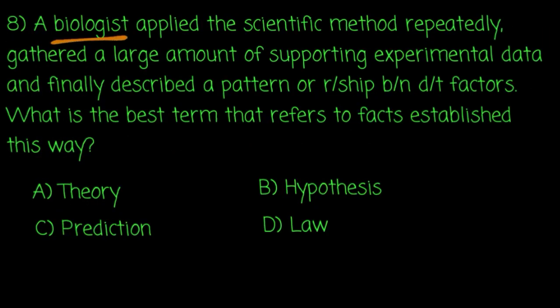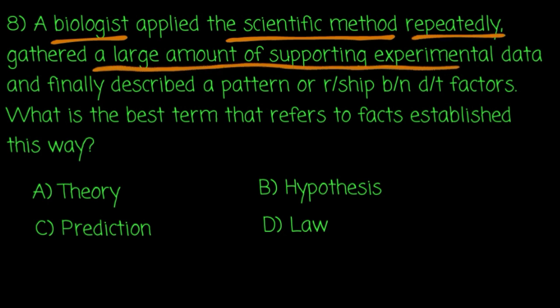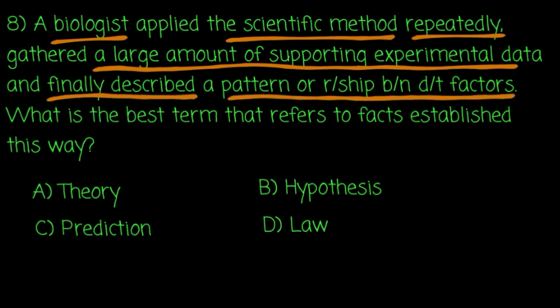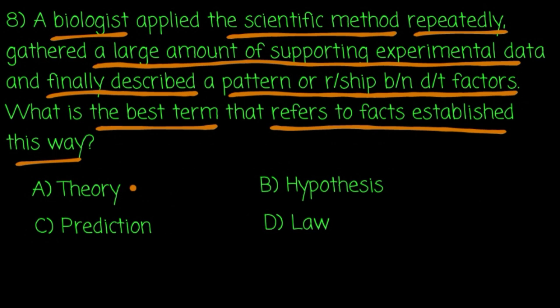A biologist applied the scientific method repeatedly, gathered a large amount of supporting experimental data, and finally described a pattern or relationship between different factors. What is the term for the facts established this way? The answer is a theory — not a hypothesis, because the hypothesis has already been tested.